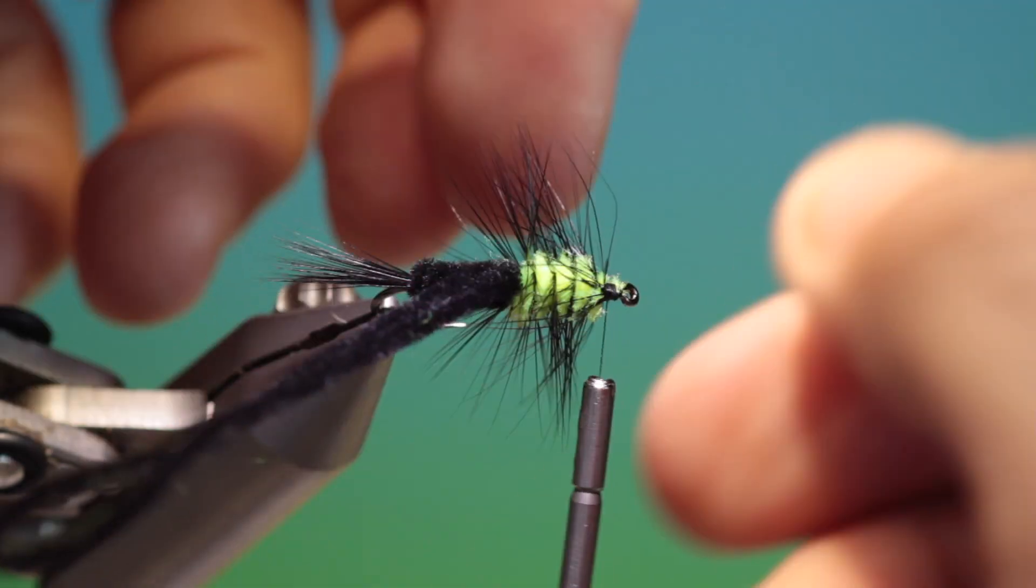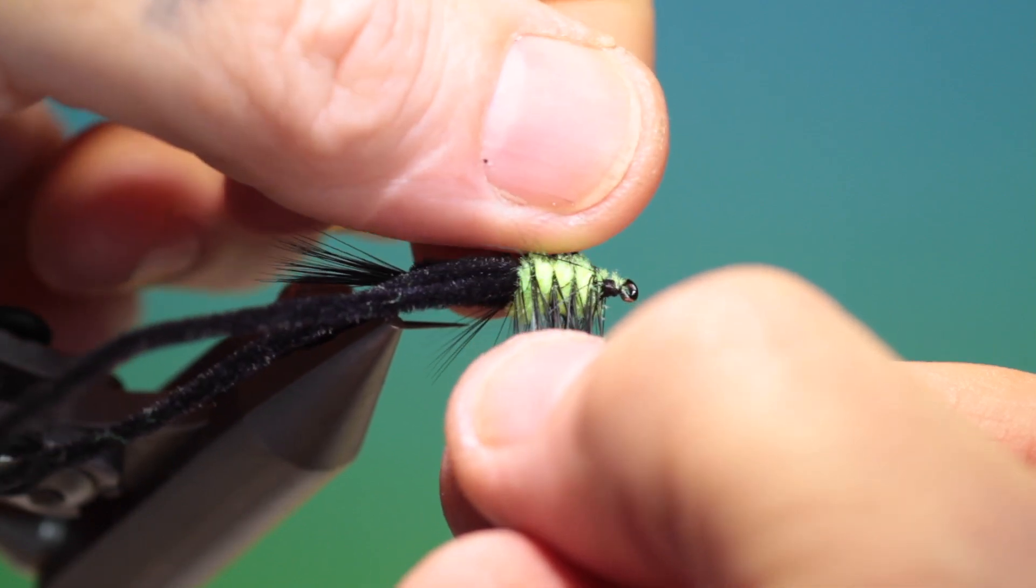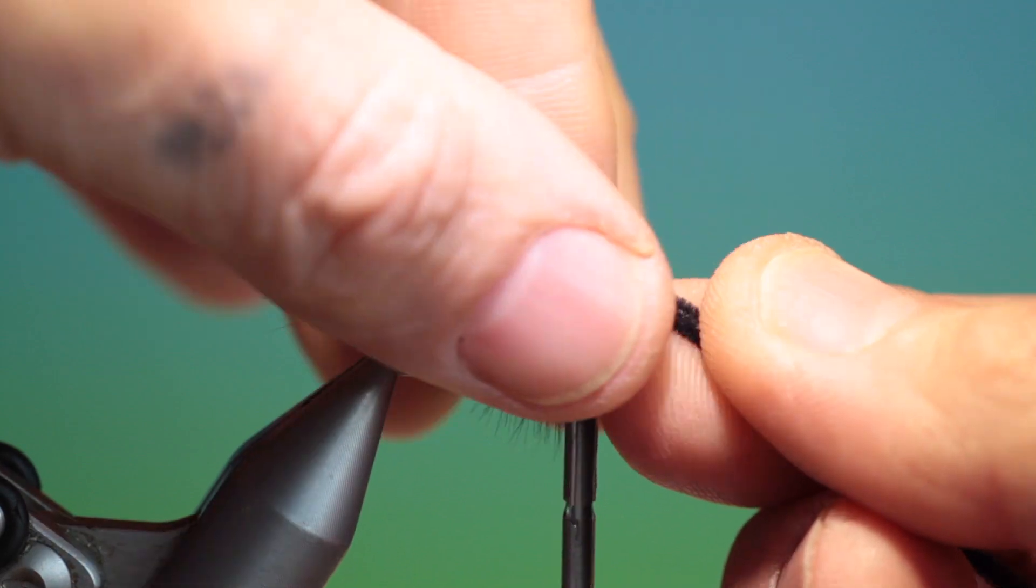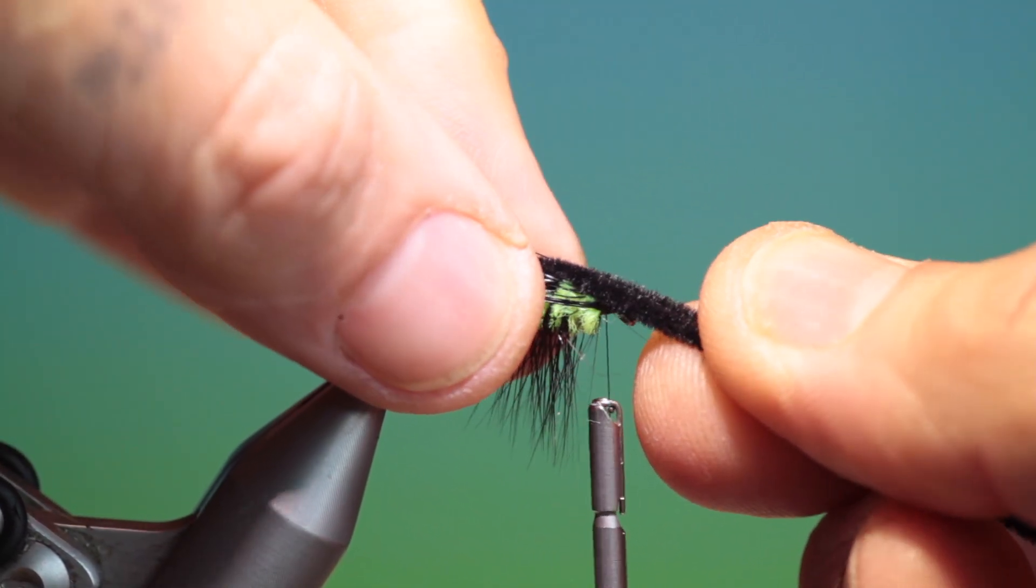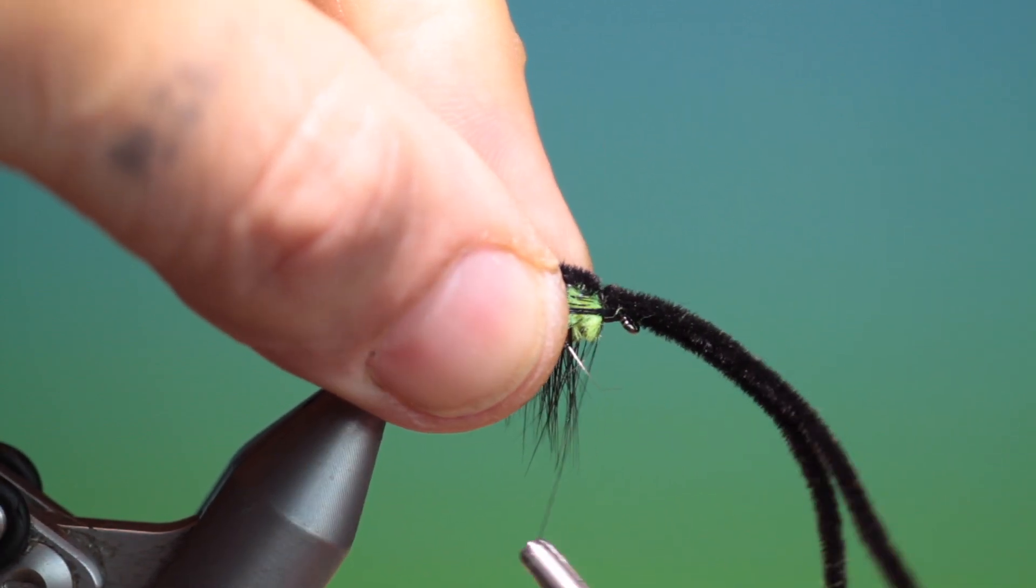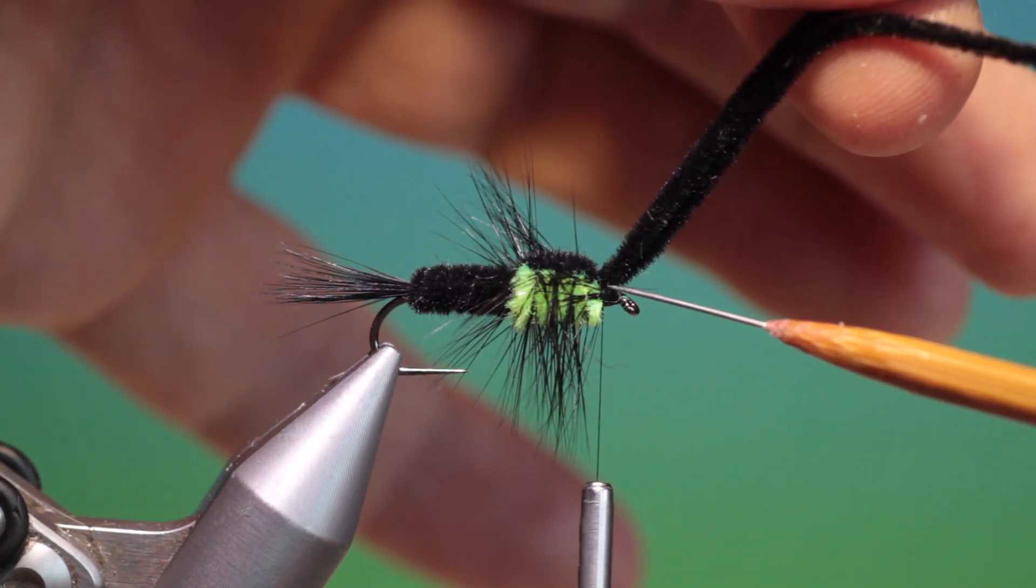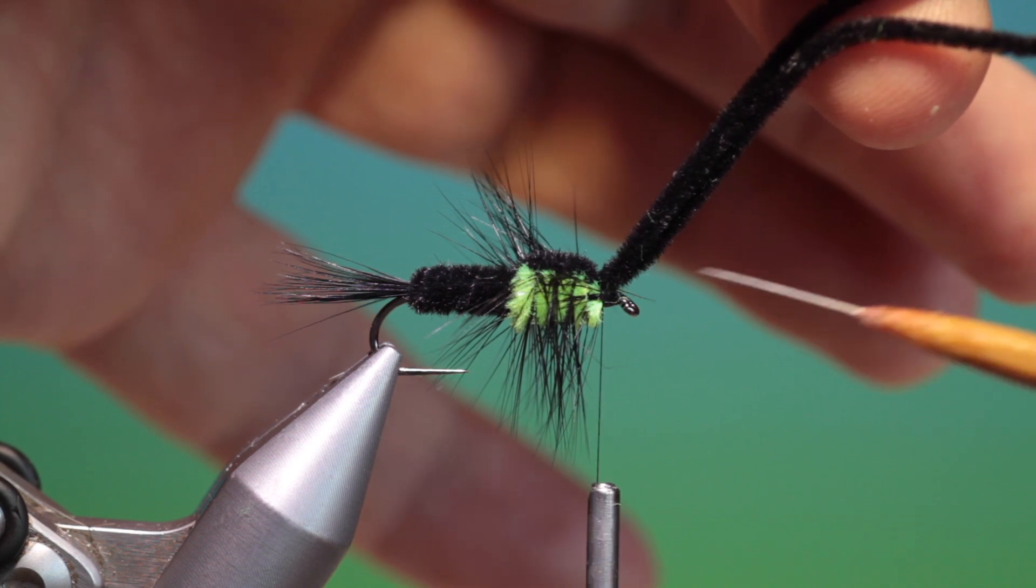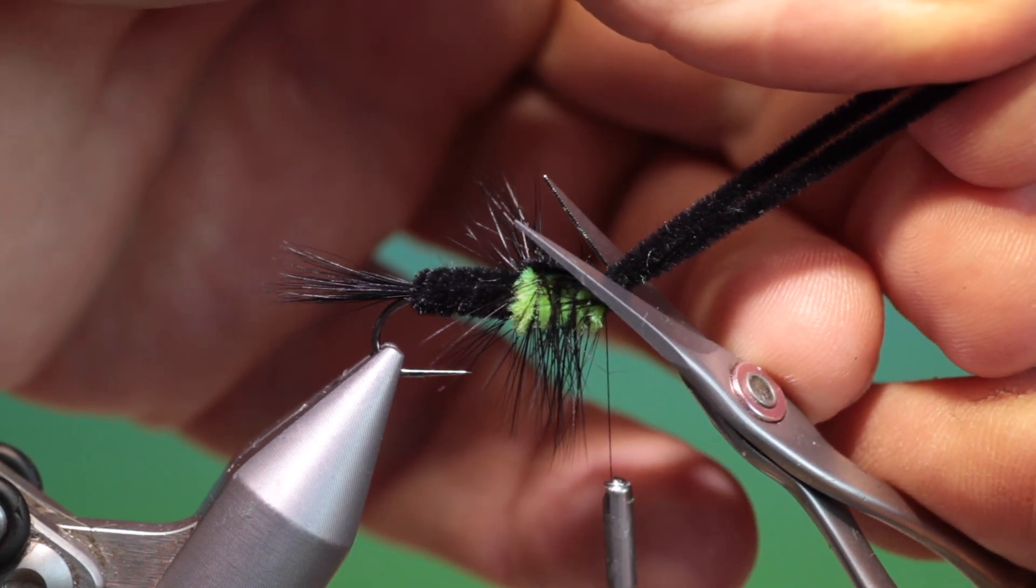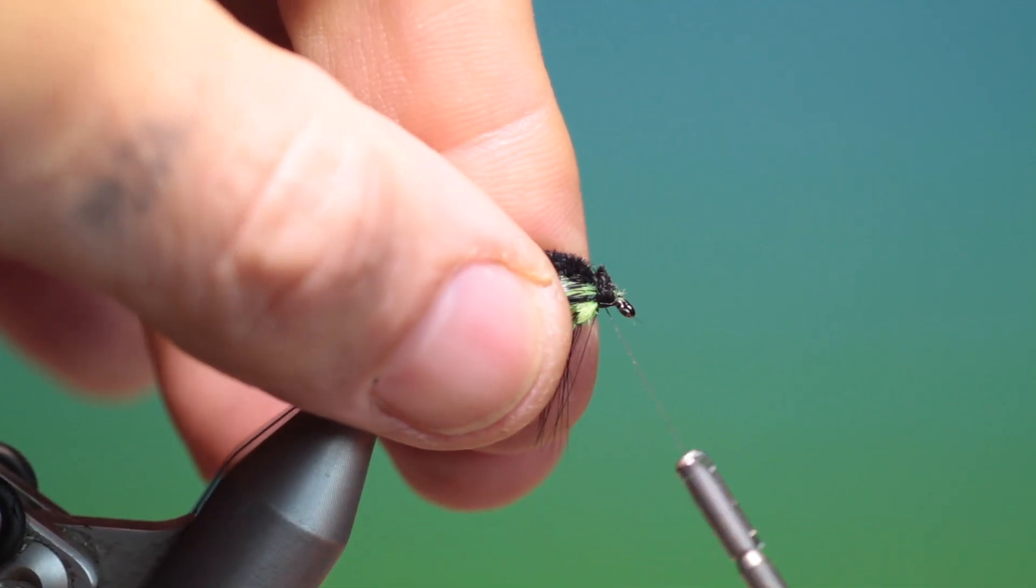And we take our legs and we pull them out to the sides, fold over our chenille for the wing case. Now again you'll see that I've made those first two wraps right into the thorax, be a distance from the hook eye. This is so we can trim this off. Rest your scissors on the hook eye. We'll trim that off like that.